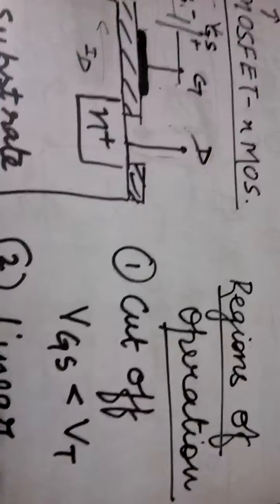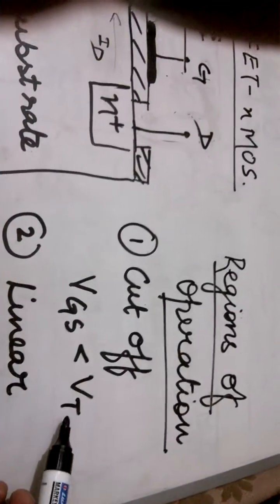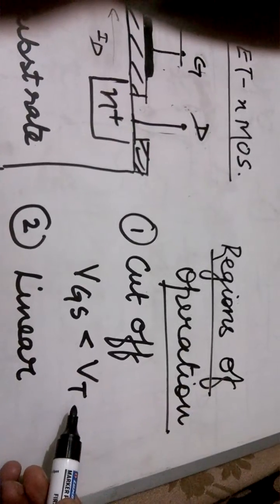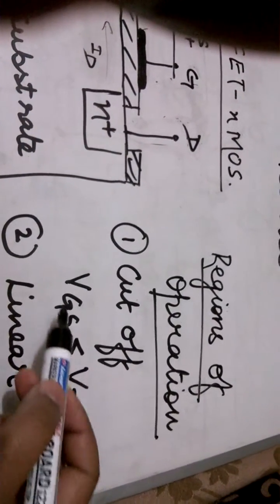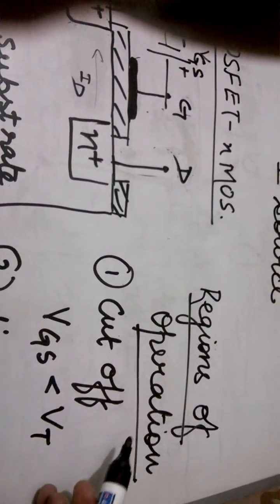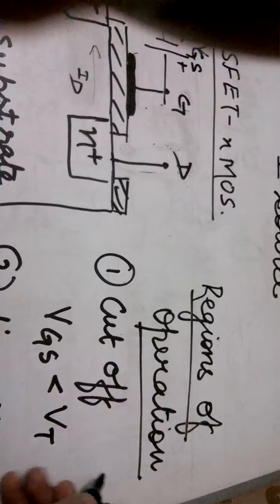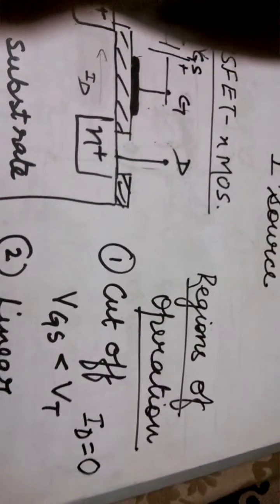Next we will discuss the regions of operation of a MOSFET. So first region is the cutoff region. We will be given the value of VT, it is around 1 to 2 volts approximately. If your VGS is less than VT the region of operation of the MOSFET will be the cutoff region and in cutoff region ID that is the drain current is equal to 0.